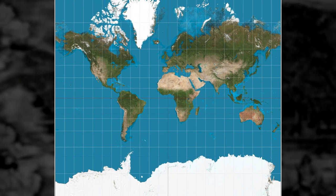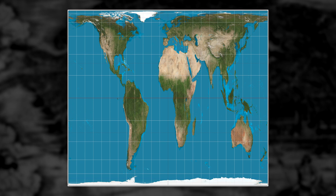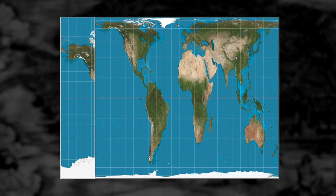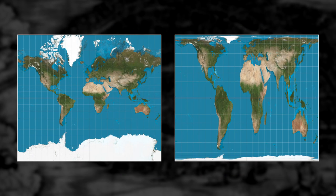Every map tells a story. What does this map communicate to its audience? And what about this map? Each map is depicting the world, but how are they different? And why are they different?